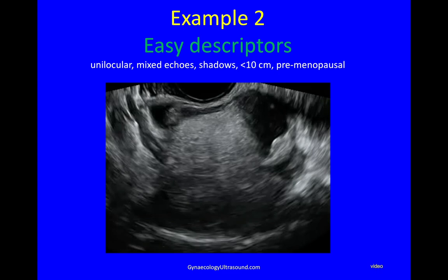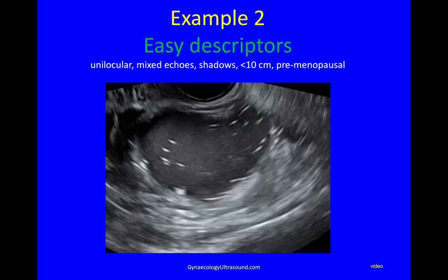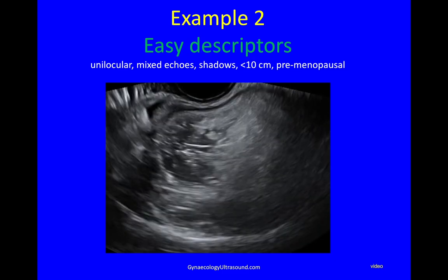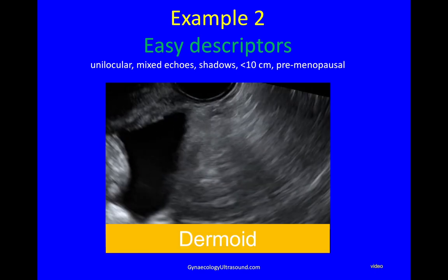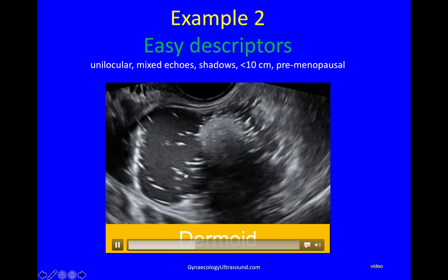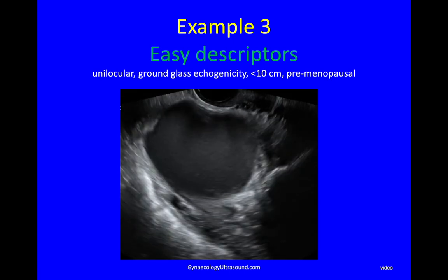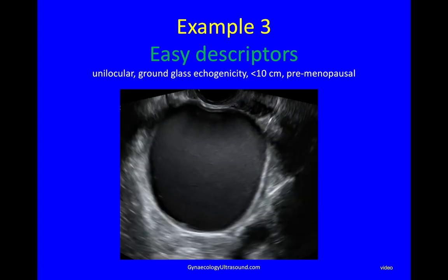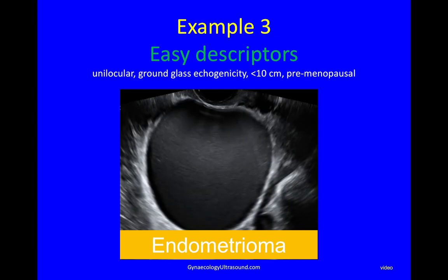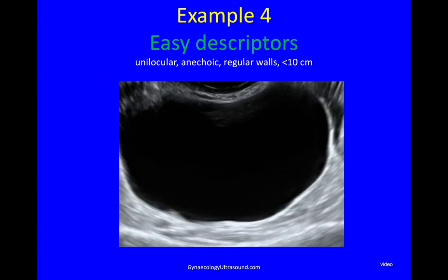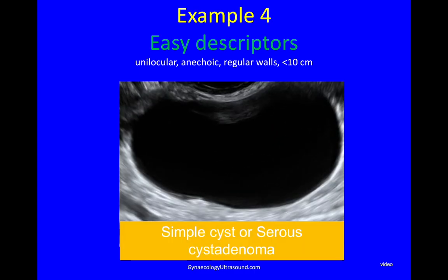Back to the easy descriptors. A different easy descriptor: a unilocular cyst with mixed echoes and shadowing in a premenopausal woman of less than 10 centimetres — you'll know this instantly as a dermoid, and the giveaway is the lines, which is hair seen only in a dermoid. Another easy descriptor: a unilocular cyst with ground glass echogenicity less than 10 centimetres in a premenopausal woman — this is an endometrioma. And a unilocular cyst with anechoic contents and regular walls less than 10 centimetres is a simple cyst or serous cyst adenoma.